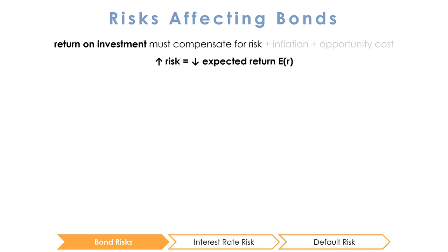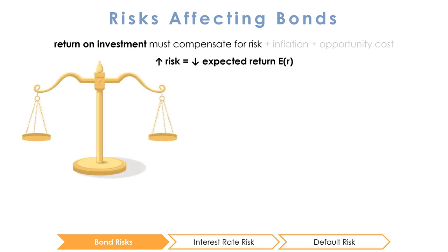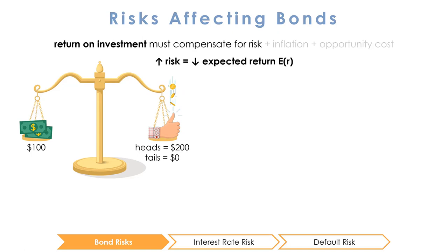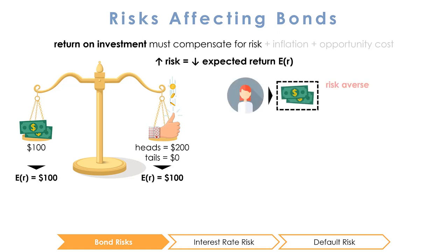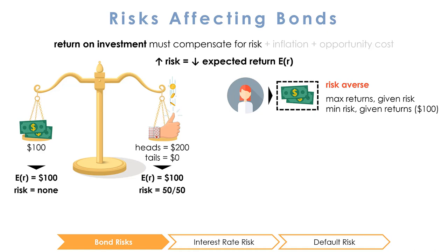Aside from the lower expected value, most investors are risk averse. What does it mean to be risk averse? Let's say you can choose between two options. Option 1: I give you $100 right now. Option 2: I flip a coin — if it's heads I give you $200, if it's tails you get nothing. The expected value in both cases is $100. You may decide to play it safe and go with option 1 — this would be the risk averse option.